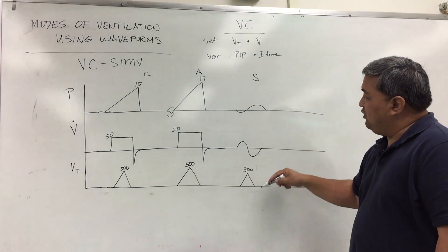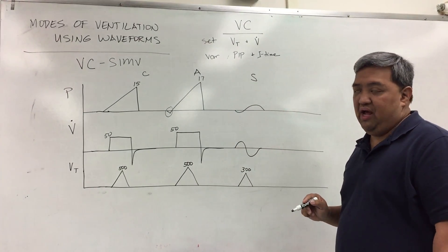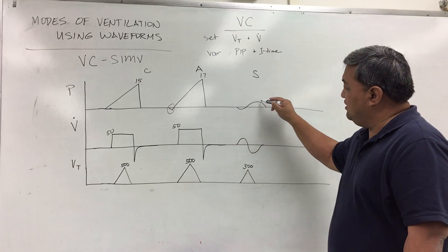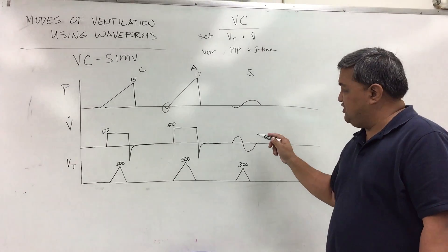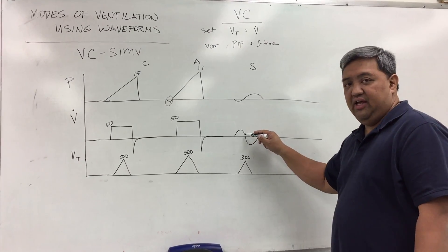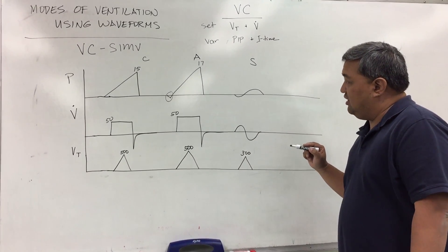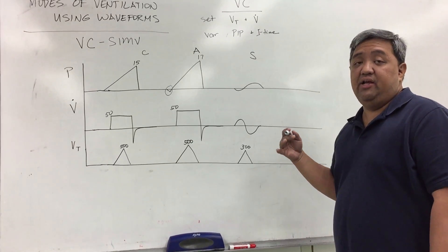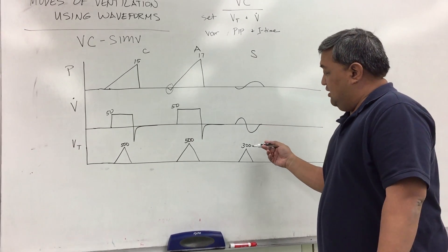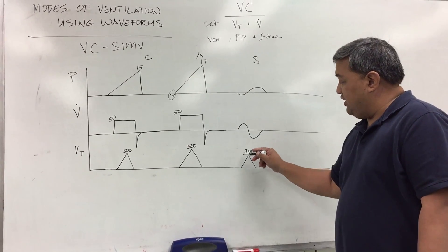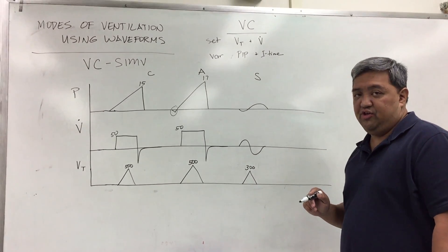On our third breath, it is a spontaneous breath. Here you see the negative pressure being generated by the patient and then positive on exhalation. The opposite for the flow, positive flow on inhalation and negative on exhalation. And then given a tidal volume depending on the deep breath or shallow breath that the patient's taking. So here I gave an example of 300 mL.